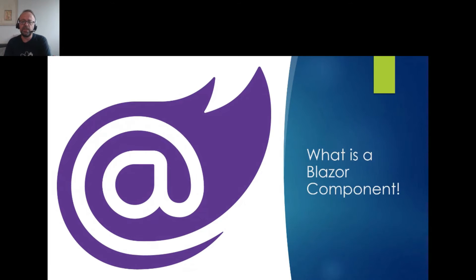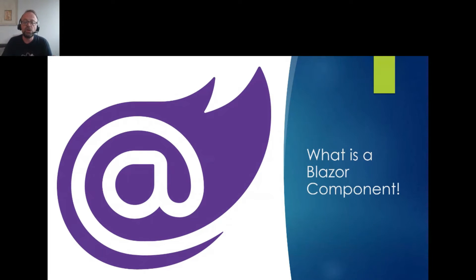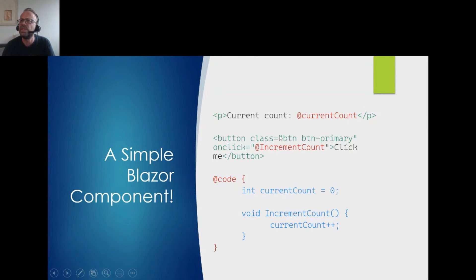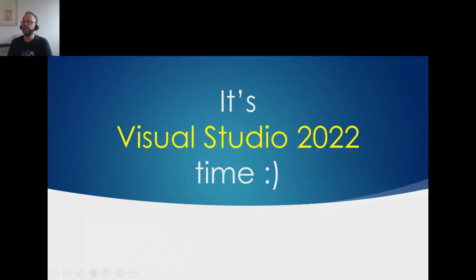Now we know more or less what Blazor is, but what is a Blazor component? Blazor applications are created using components which are flexible, lightweight, nestable, reusable, and shareable between projects. Components are self-contained chunks of user interface — it can be a dialog, a form, or an entire page. For example, this counter component from the Microsoft sample: you click a button, a method runs, the counter increases, and you can see it live without any refresh.